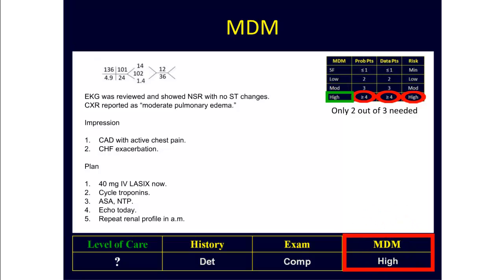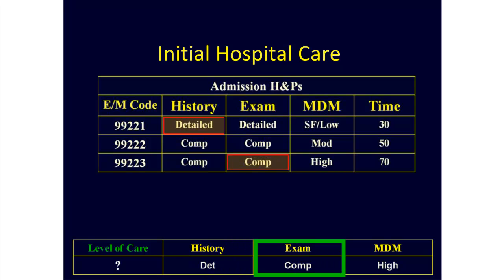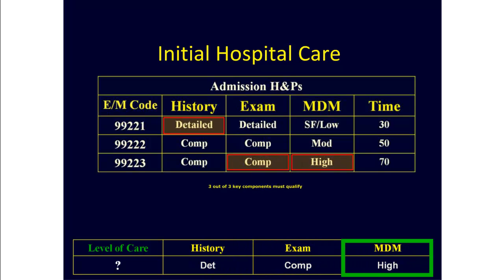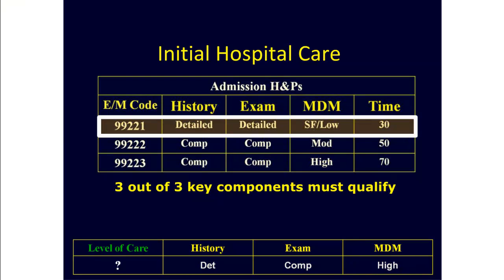Now that we know the key components, we can figure out what level of care has been recorded. Here we have a detailed history, a comprehensive exam, and high-complexity medical decision-making. For these encounters, three out of three key components are needed — that is, each key component must meet or exceed the requirements for any given level of care. In this case, the note was ruined by the ROS mistake, which broke the history. Therefore, we only qualify for the 99221 level of care.